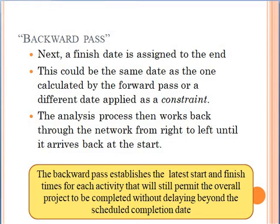We are continuing with the CPM method, but this time we want to see how we do the backwards pass calculations. We will begin from right to left. The beginning point will be the completion time of the project. This date can be the same date as the one we got with our forward pass calculations, or sometimes in the contract it's stated that you must deliver the project at a specific date. So this date will be the point at which you begin the backward pass calculations.